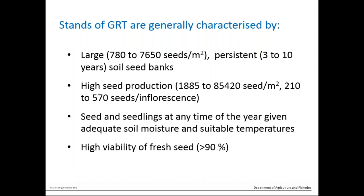Some more characteristics about Giant Rat's Tail Grass: it has very large seed banks and produces a lot of seeds. Some measured seed production per metre squared in dense Giant Rat's Tail Grass is 85,000 seeds in a year, which is quite high. In one seed head or inflorescence that can be 200 to 500 seeds. It will seed and you can get seedlings at any time of year given adequate soil moisture and suitable temperatures. Of that 85,000 seeds per square metre, 90% are viable.